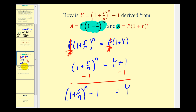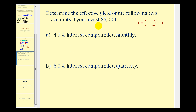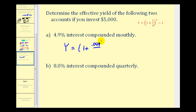Let's look at two more examples — determine the effective annual yield of two accounts if you invest $5,000. Note that determining the effective annual rate does not require knowing the amount of the investment. For the first account: Y = (1 + 0.049/12)^12 − 1, since it is compounded monthly (N = 12).